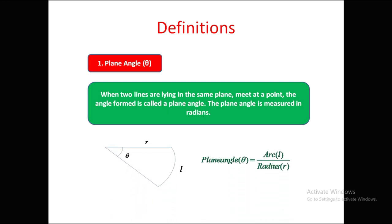There are two lines — one line and another line at some angle — and that angle is called plane angle theta. These two lines subtend an arc of length l. So we define: plane angle theta equals arc divided by radius, where l is the arc and r is the radius. So theta = l/r.